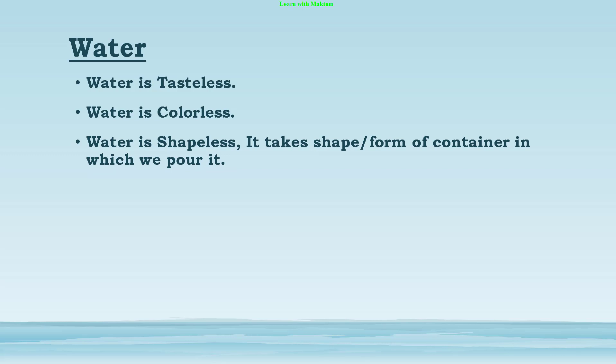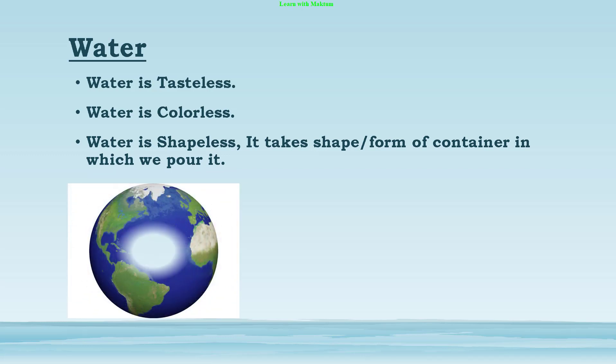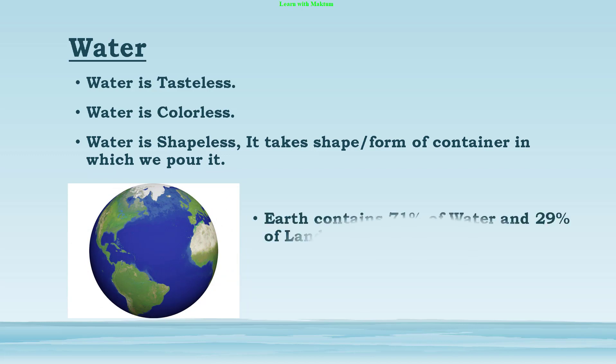Now consider our Earth. Our Earth contains 71 percent of water surface and 29 percent of land. So here you can see that the percentage of water is more than that of land.